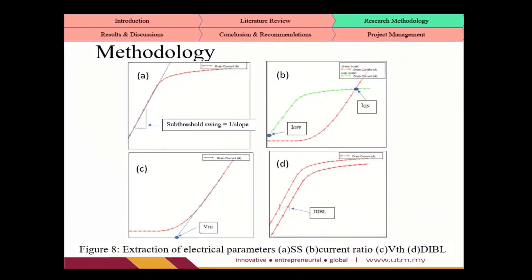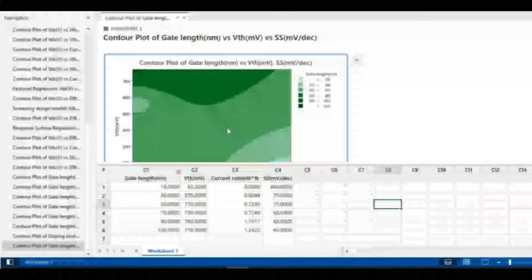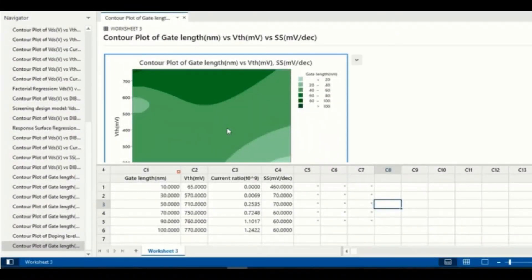Electrical parameters SS, DIBL, VTH, and current ratio are analyzed as shown here. A is sub-threshold swing, B is current ratio, C is threshold voltage, and D is DIBL. The results are tabulated in MINITAB and a control graph is plotted.